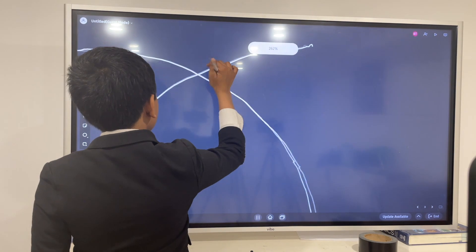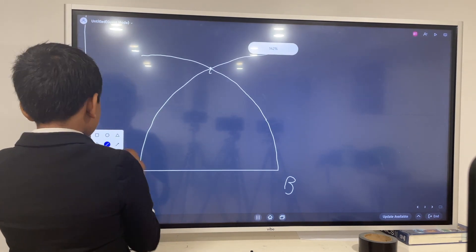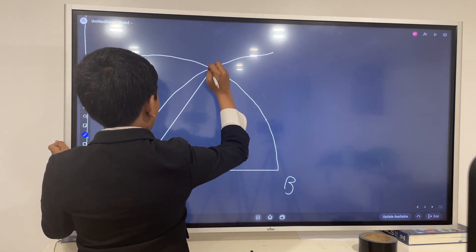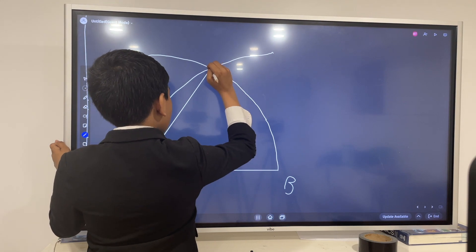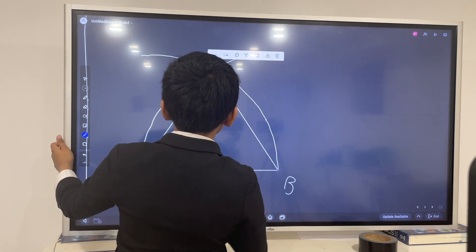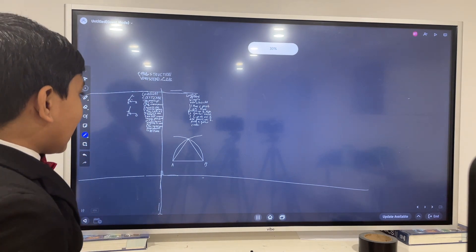So now you take the point where they intersect. You call it C. You draw AC. And boom, there's your equilateral triangle.